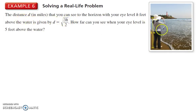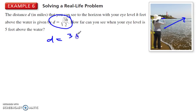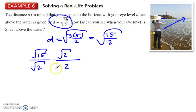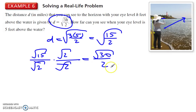Here's a real-life problem: the distance you can see to the horizon is given by a formula where h is how far you are above the water. With h = 5, we get the square root of 3 times 5 over 2, which is √(15/2). Since there's a fraction in the radicand, I split this up using the quotient property and rationalize the denominator by multiplying by radical 2 over radical 2. That gives radical 30 over 2, which is approximately 2.74 miles.